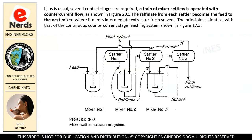If, as is usual, several contact stages are required, a train of mixer settlers is operated with counter-current flow as shown in Figure 20.5. The raffinate from each settler becomes the feed to the next mixer, where it meets intermediate extract or fresh solvent. The principle is identical with that of the continuous counter-current stage leaching system shown in Figure 17.3.